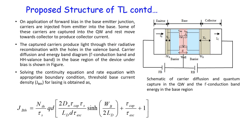Here, the schematic of the carrier diffusion and quantum capture in the quantum well's gamma conduction band in the base region is shown. The captured carriers produce light through radiative recombination with holes in the valence band. Solving the continuity equation and rate equation with appropriate boundary conditions, the threshold base current density is obtained.